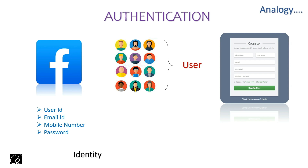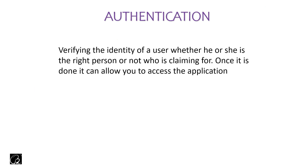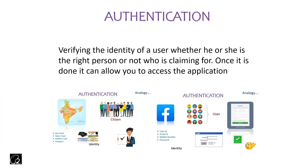After that, there is a process called login, where you have to show your identity — like username, user ID, password, etc. — so that Facebook can understand who you are and whether you are the right person claiming to be. Once it is verified, you have successfully authenticated in this application. This entire process — from showing your identity to verifying it — is called authentication. So authentication is nothing but a process of verifying the identity of a user, whether they are the right person or not. Once it is done, it allows you to access the application.